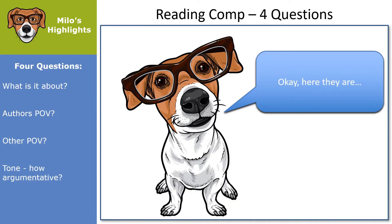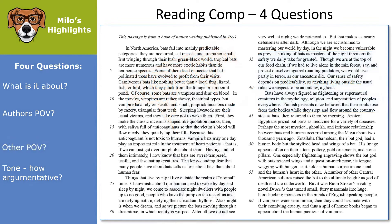The four questions are: what's the passage about, what's the author's point of view, are there other points of view, and what's the tone — how argumentative is it? Let's take a look at an example. I'm going to show you how I read this. First, I see this is from a nature book — remember, always read the italicized stuff. Next, I just read the first sentence of the passage and it tells me it's about bats. This is easy.